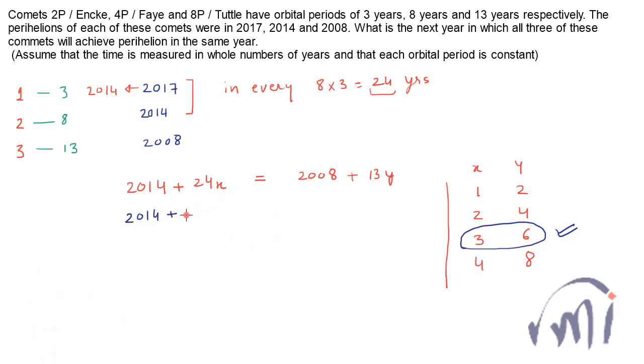When I substitute x equal to 3, this will be 2014 plus 24 multiplied by 3, that is 72. If I substitute y equal to 6, this will be 2008 plus 78. 2014 plus 72 will give you 2086, and 2008 plus 78 will also give you 2086. So 2086 will be the year in which all these 3 comets will have their perihelion together.